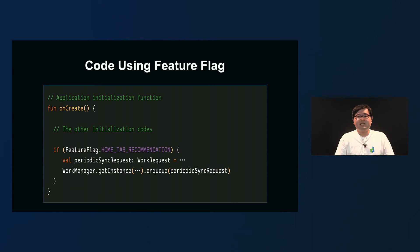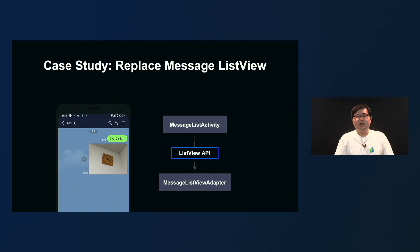Here's the code. By guarding the WorkManager registration point with Feature Flag — the point which enables or disables the feature — you can prevent the feature from running by turning the flag off. Next is Refactoring.